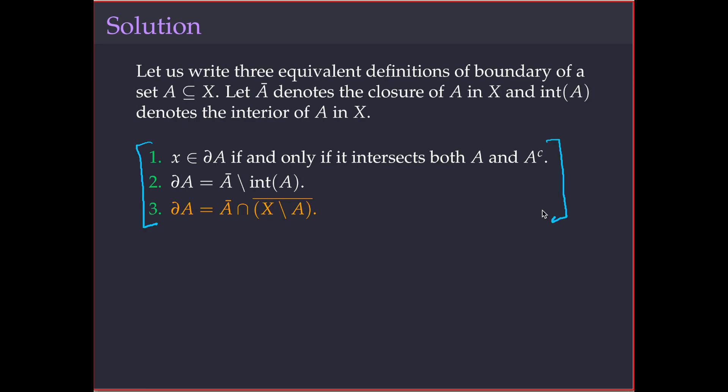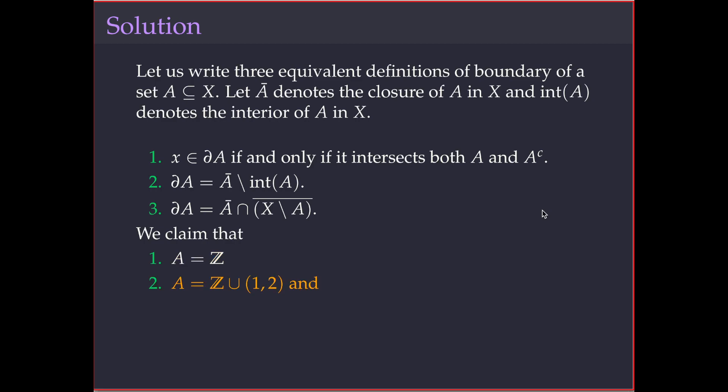Now let's see examples where the boundary of the set is ℤ. We claim: if A = ℤ, then ∂A = ℤ. If A = ℤ ∪ {1/2}, then also ∂A = ℤ. And if A = ℤ ∪ (2,3), then also ∂A = ℤ.